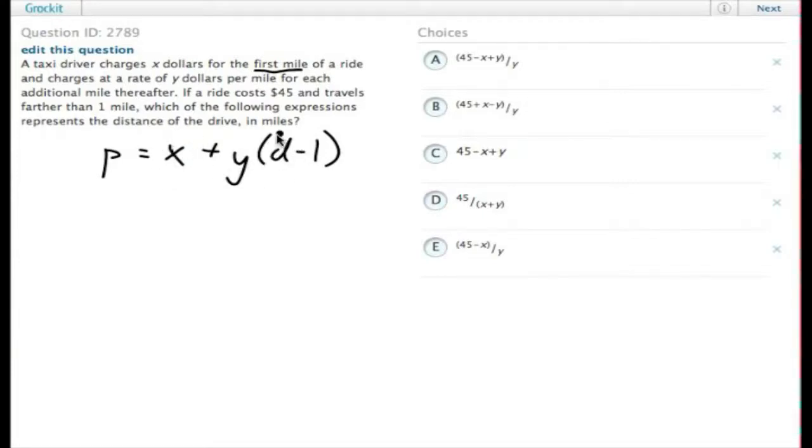So if the distance was 5 miles, it would be 4 miles times Y, the rate per mile, plus X, which is the first mile.